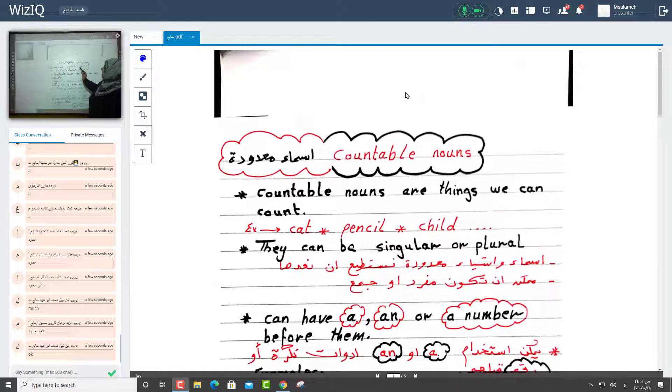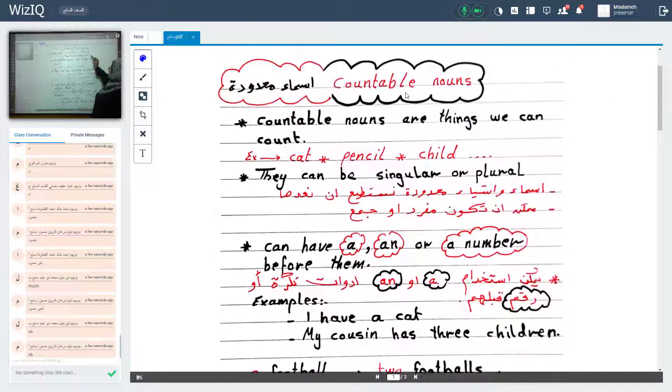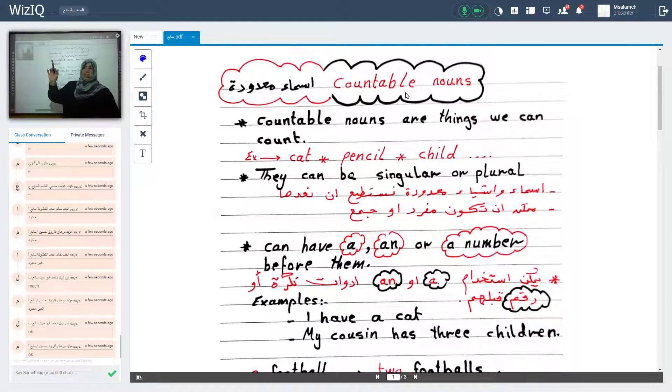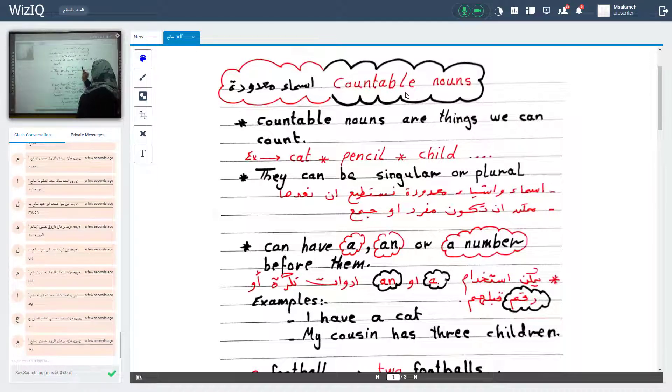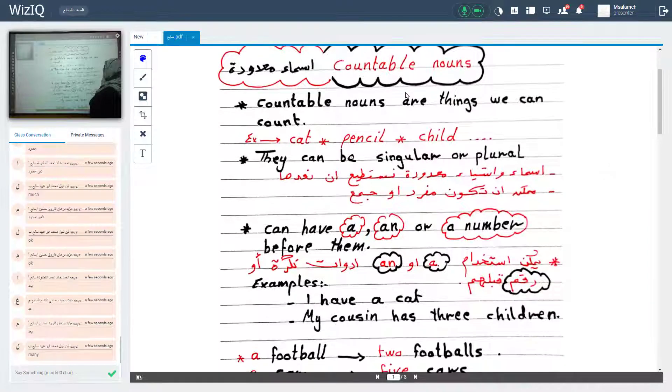Countable nouns. أسماء معدودة. Countable nouns are things we can count. What do you mean by count? يعني أشياء أستطيع أن أعدها. عبارة عن أسماء أو أشياء أني أنا أستطيع أن أعدها. Cat, pencil, child. They can be singular or plural. ممكن أنها تكون مفردة أو جمع. أسماء وأشياء معدودة نستطيع أن نعدها. ممكن أن تكون مفردة أو جمع. Look at here.